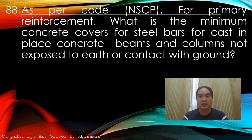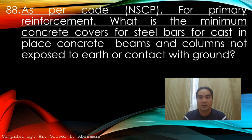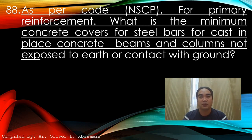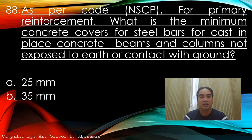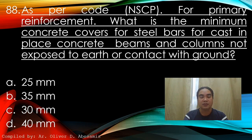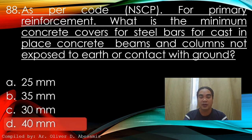Question 88: As per the NSCP code, what is the minimum concrete cover for steel bars for cast-in-place concrete beams and columns not exposed to earth or contact with ground? A) 25mm, B) 35mm, C) 30mm, D) 40mm. Answer: D) 40mm.